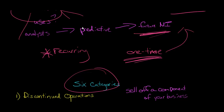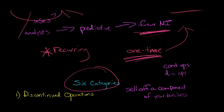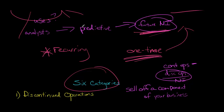With discontinued operations, you're selling off a component or a unit — some kind of component of your business. It's not just like you sold a truck; it's an entire component, a collection of assets that are making money or generating a loss. You're getting rid of that component of your business, and because you're getting rid of it, it's not going to affect future net income. So you separate it out and say this is part of discontinued operations. You've got your continuing operations, and then you've got these discontinued operations that technically go into net income too, but you want to separate them out so you can see they're just one time — they're no longer going to be recurring. You can then use continuing operations as a better predictor of future net income.